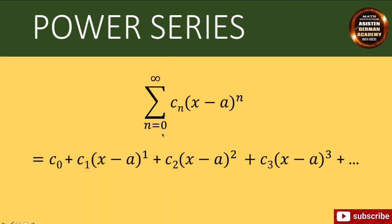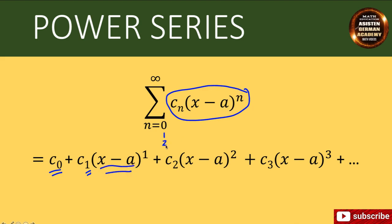Let's expand our power series from n equals 0 to infinity. Our form would be: C sub 0 times x minus A raised to 0, which equals C sub 0; plus C sub 1 times x minus A raised to 1; plus C sub 2 times x minus A squared; plus C sub 3 times x minus A cubed; and the pattern continues to infinity. The main question now is: what are the values of these coefficients — C sub 0, C sub 1, C sub 2, C sub 3, up to C sub n?